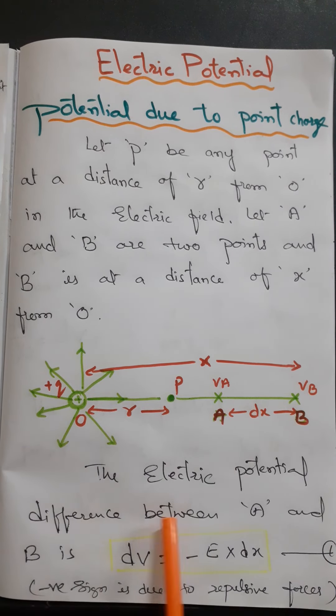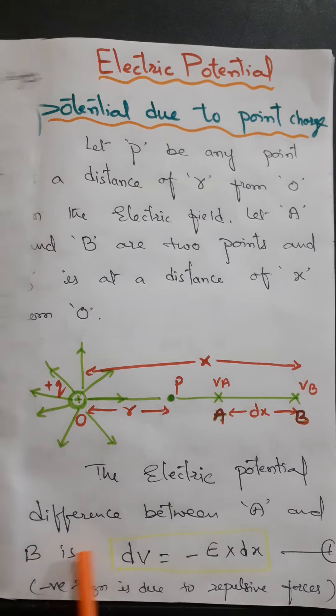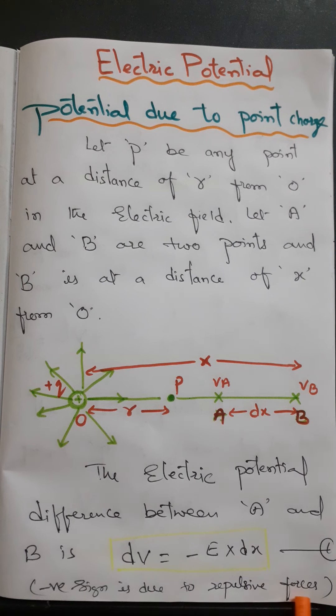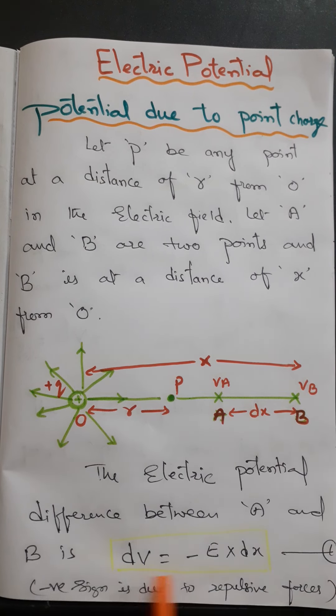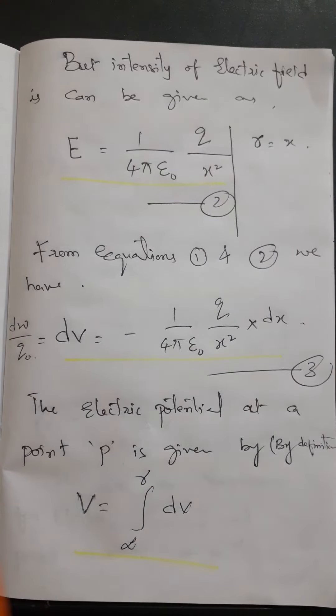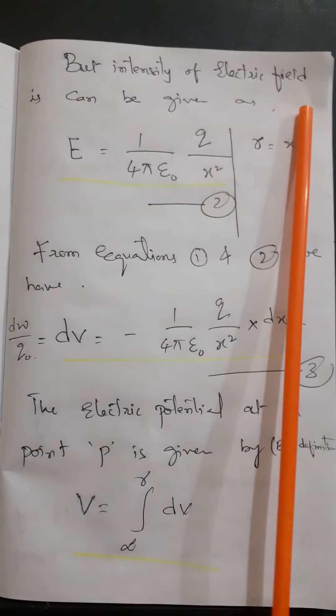Now the electric potential difference between A and B can be written as minus E into dx — let us take that as equation number 1. The negative sign is only for against the repulsive forces. The intensity of the electric field can be given as 1 by 4 pi epsilon-naught times Q by X squared — let us take that as equation number 2. Here, X is the distance between point B and O.